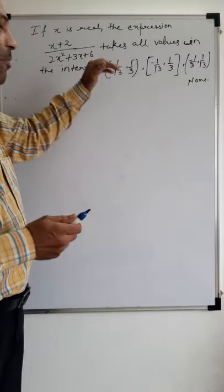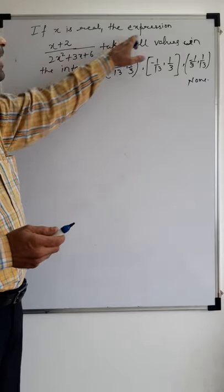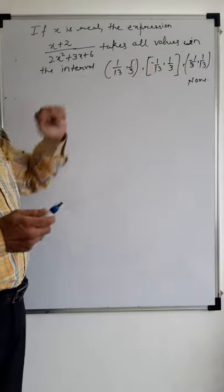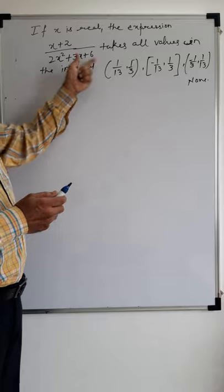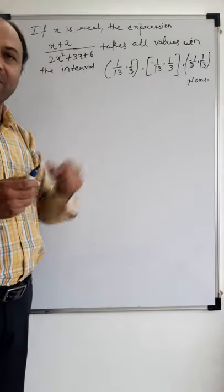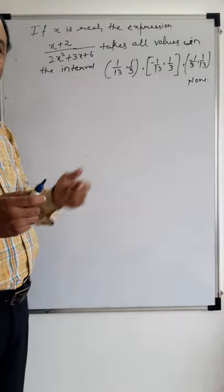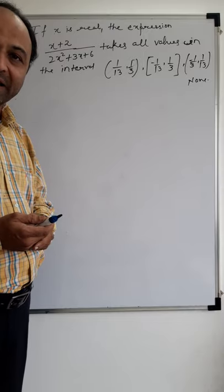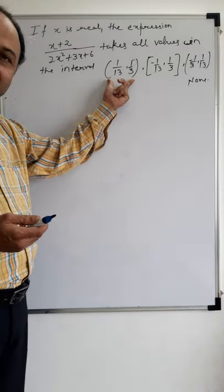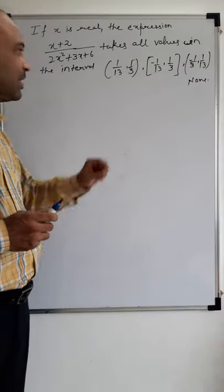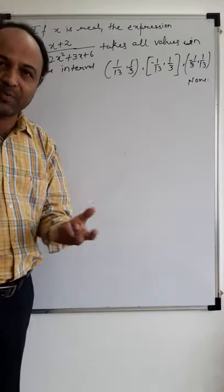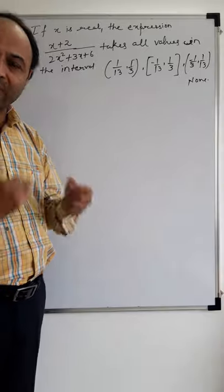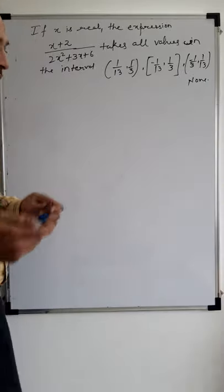We will look at this type of problem: if x is real, then the expression (x+2)/(2x²+3x+6) takes all values in a certain interval. This means we need to find the maximum and minimum value of this expression — in other words, the range. Range is maximum and minimum value, as you know in functions. This function can appear in exams in two ways: either x is lying in an interval, or find the range of f(x).